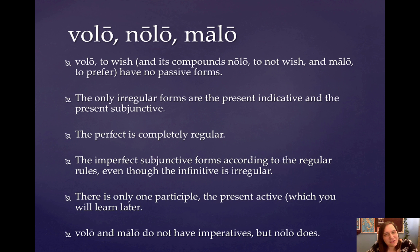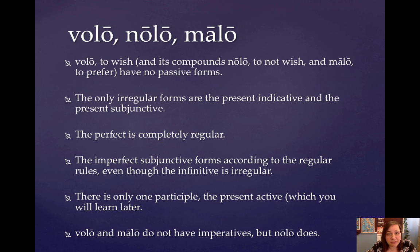Their present infinitives look a little bit odd, and we'll talk about why when I flip the slide and you can see what volo's present infinitive is. Basically what you should know is that this is a somewhat irregular third conjugation verb. So it's going to form its imperfect indicative and its future indicative following the rules of the third conjugation.